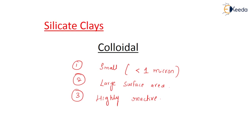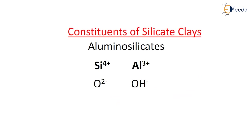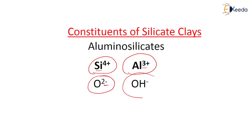Coming to the constituents of silicate clays - they have aluminosilicates, which are Si (4+), Al (3+), O (2-), and OH- (hydroxide, 1-). These are the ions present in the valency shell. These four ions are arranged together to form crystals with a number of important properties which are related to soil reactivity.